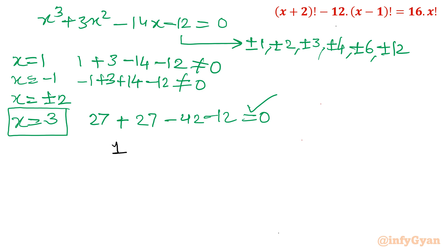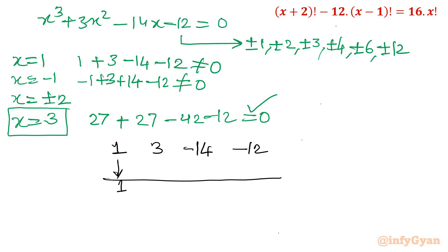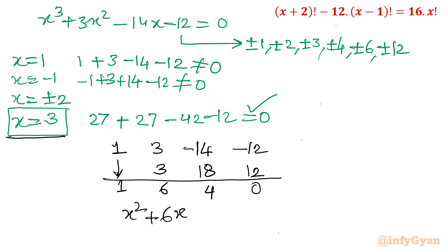I will use synthetic division with root x=3 and coefficients 1, 3, -14, -12. Bringing down 1; 3×1=3, giving 3+3=6; 3×6=18, giving -14+18=4; 3×4=12, giving -12+12=0. So the cubic factors as (x-3)(x² + 6x + 4) = 0. Thus x=3 is one solution, and the remaining quadratic is x² + 6x + 4 = 0.